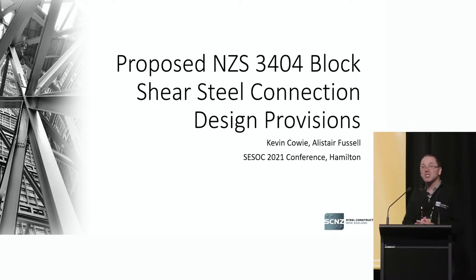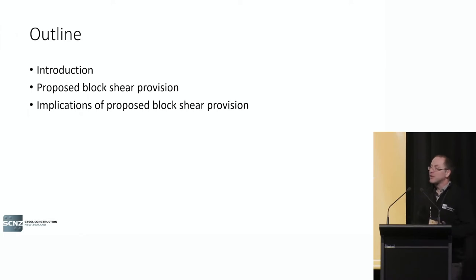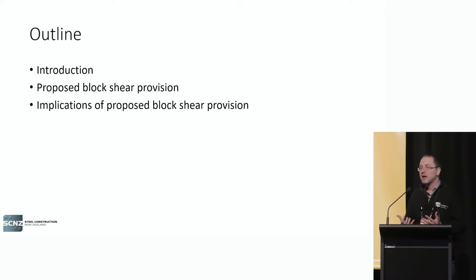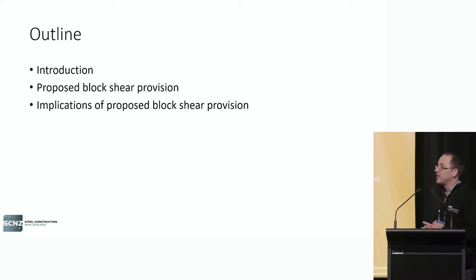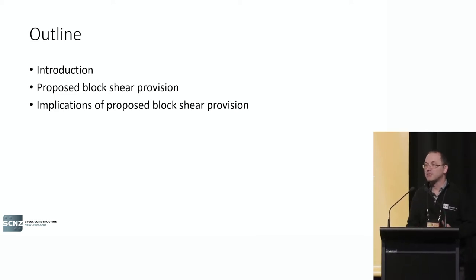This is quite a specialised topic to do with steel — in particular a connection type and some new proposed provisions that we're intending to put in the Steel Structure Standard NZS 3404. Where are we going in this presentation? It's really quite a simple presentation: a bit of an introduction, a bit of background — what's block shear, why are we developing this paper, what's the purpose of it — and then we'll go into the details of the proposed block shear provisions for 3404. Then I'll look at the implications for your design practice — will it mean a different way of connection capacity, or are we looking at pretty much business as usual?